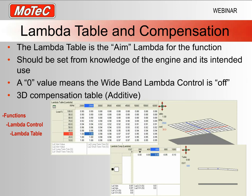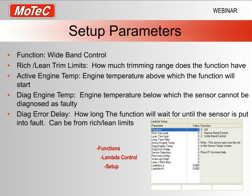The setup parameters are found at Functions > Lambda Control > Setup. There's a fair list here. The last three we won't be covering today because they relate to narrowband control — I'll just be dealing with the other ones.